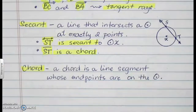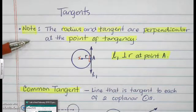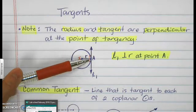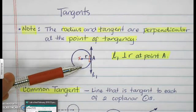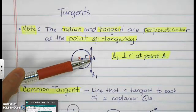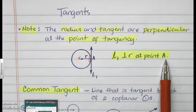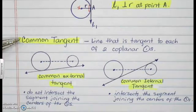Note: the radius of a circle and a tangent are perpendicular at the point of tangency. In this illustration, circle X has line L as its tangent at point A, and radius XA forms a 90-degree angle with line L. This is because the radius and the tangent are always perpendicular at the point of tangency.